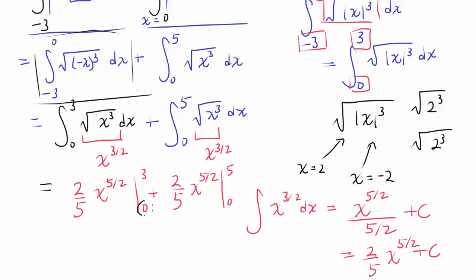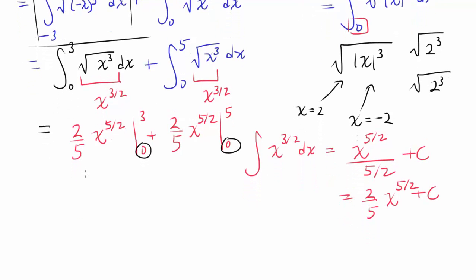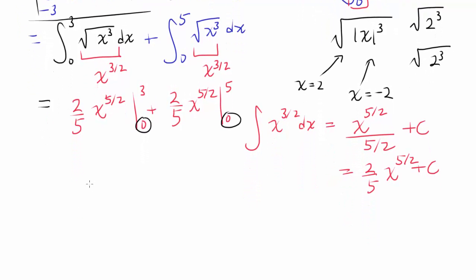When we plug in 0, we get 0, so we can ignore those terms. We just evaluate at x = 3 and x = 5 and add the results: 2 fifths times 3 to the 5 halves, plus 2 fifths times 5 to the 5 halves.